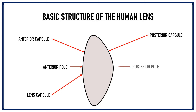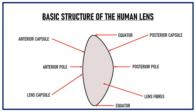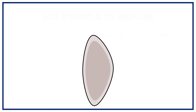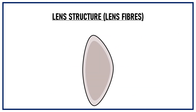This is the anterior pole of the lens and this is the posterior pole of the lens. The point where the anterior and the posterior capsules meet each other is known as the equator of the lens. Internal to the lens capsule are present lens fibers.